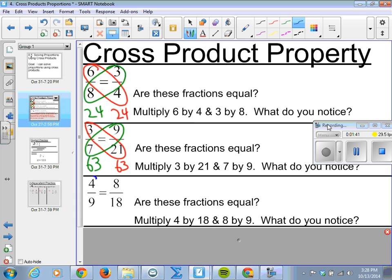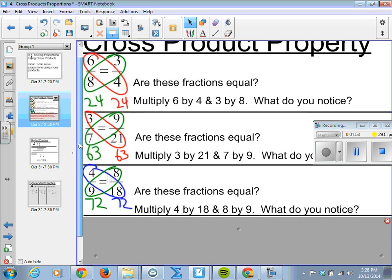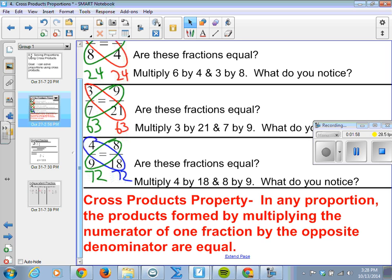4 times 18 is 72, and then 8 by 9 is 72. Again, cross-products are equal. Therefore, our fractions are equal. And that is what this cross-products property says.